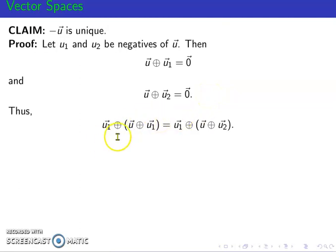Thus, u1 plus the quantity vector u plus vector u1 is equal to the vector u1 plus vector u plus u2. That is because of these two equations here. So ito kasi equals to 0 and then the 0 is equal to this one. So by transitivity, this vector and this vector are equal. So we can replace this one by this.